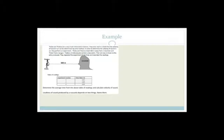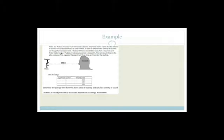Tabo and Tabiso are very interested in science. The velocity of sound in air can be determined by the echo method. Tabo and Tabiso stood 500 meters away from a mountain and Tabo fired a toy gun. Tabiso simultaneously started a stopwatch. Their aim was to listen to the echo produced. They repeated the experiment three times and recorded the readings — the same person shot the gun each time and the same person recorded the time, which is good experimental practice.